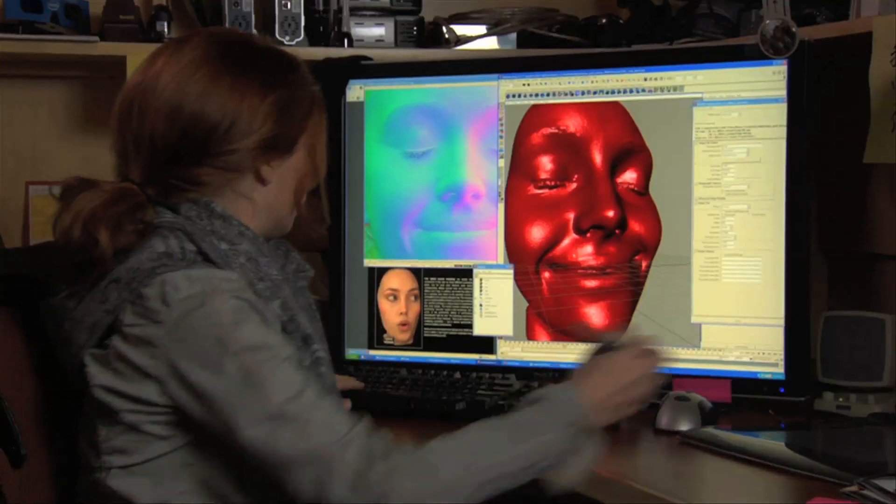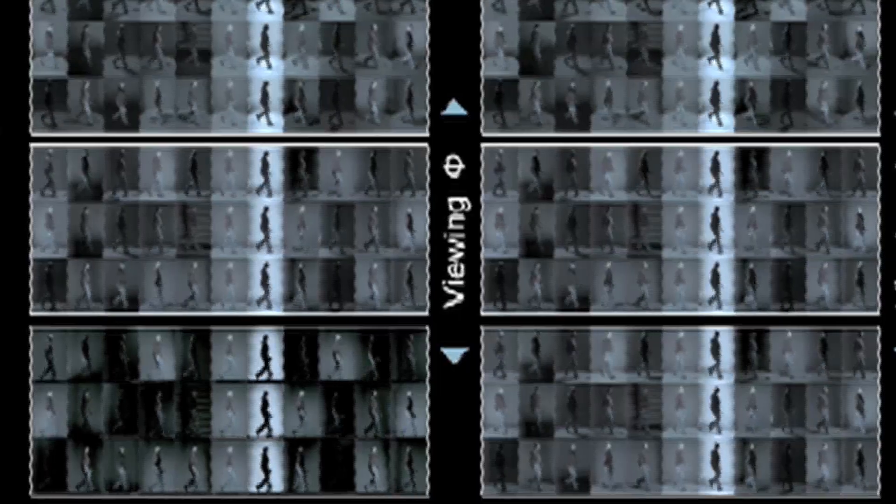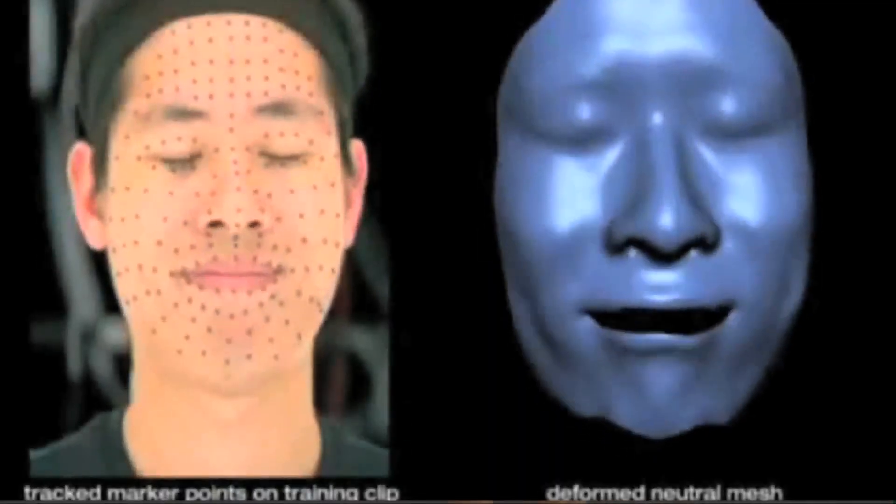In the graphics laboratory of the USC Institute for Creative Technologies, we want the things that you see in simulations and video games and movies, even if they're completely computer-generated, to look absolutely realistic.